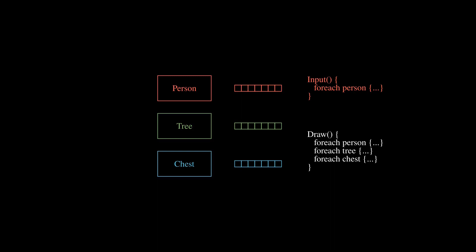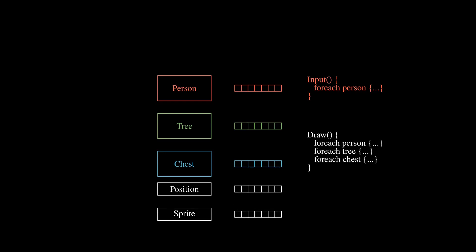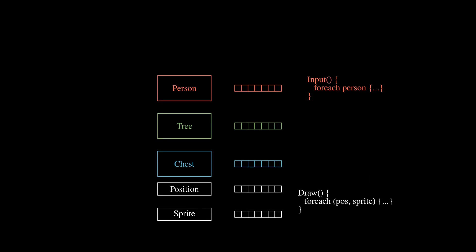Let's reevaluate our game objects and see if we can organize their internals a bit better. Suppose we take the position and sprite components out of our person, tree, and chest and put them into their own array. After all, position and sprite are all we need to draw to the screen. Then we can rewrite our three for loops into a single for loop.